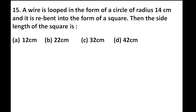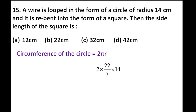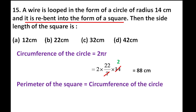Moving to the 15th question. A wire is looped in the form of a circle of radius 14 cm and re-bent into the form of a square. Find the side length of the square. Circumference of circle = 2πr = 2 × (22/7) × 14 = 88 cm. Since the same wire forms the square, perimeter of square = circumference = 88 cm. So 4a = 88, giving a = 22 cm. Hope you would have understood the concept and practice.